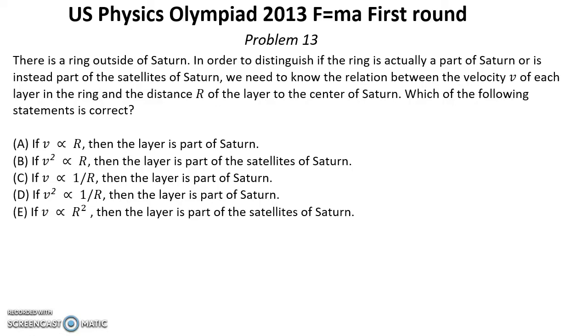Solution. First let's investigate how this velocity depends on radius in each case. Suppose that we have this layer part of Saturn. In that case we have velocity equals omega r and it's definitely proportional to radius r.